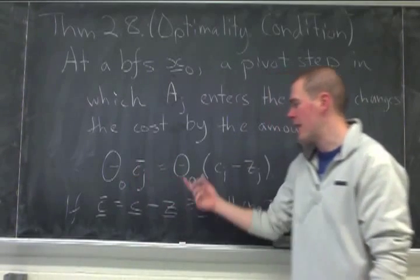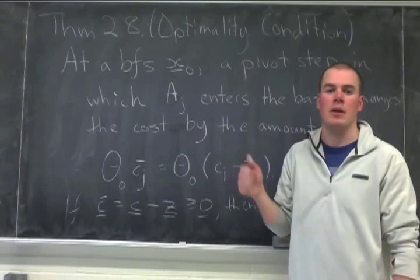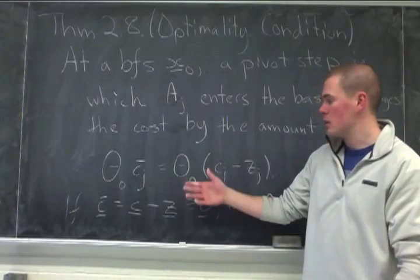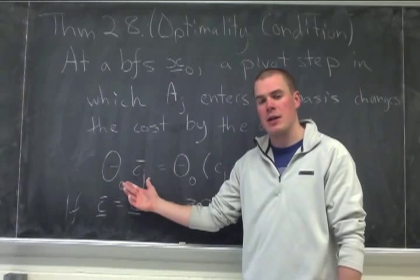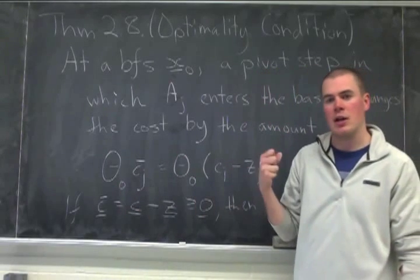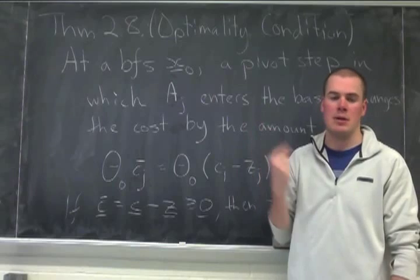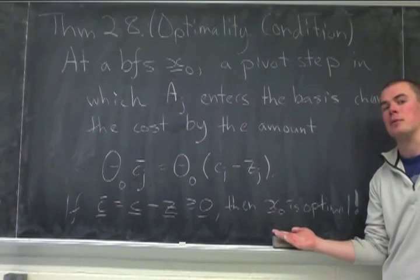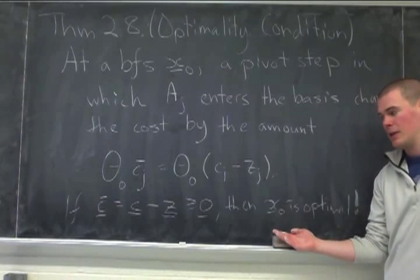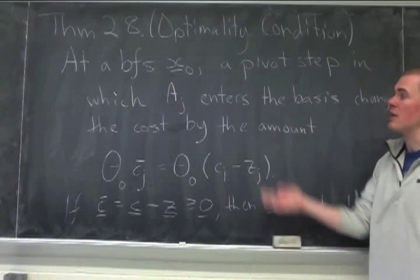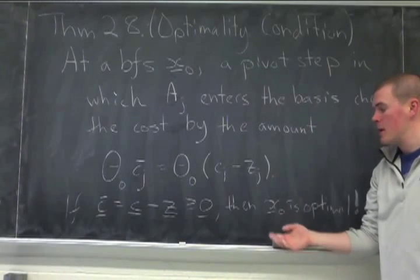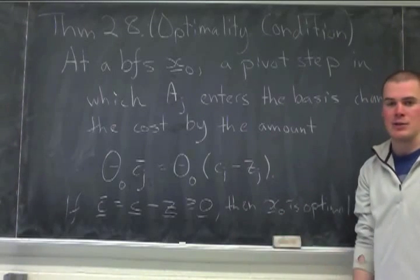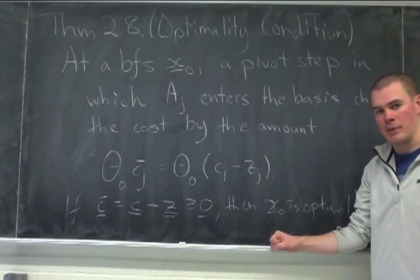And because it's non-negative, as I increase theta, I'm going to be increasing my cost function. But remember, we're trying to minimize the cost function. So if I have c sub j bar always non-negative, then no matter which direction I go, I'm only going to be increasing the cost function. I want to lower the cost. So if I have this condition, then this is an optimal basic feasible solution. So what we're going to try to do is find a basic feasible solution such that this optimality condition holds. And once we are there, we have found our optimal and we can stop.